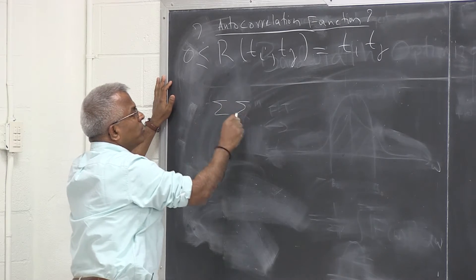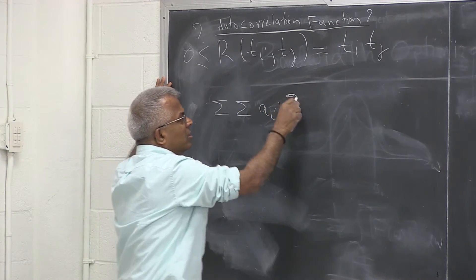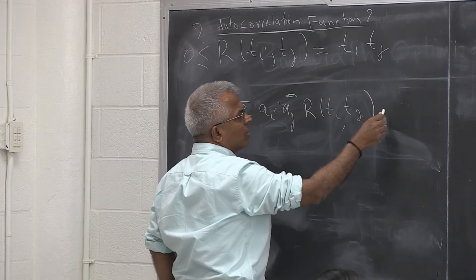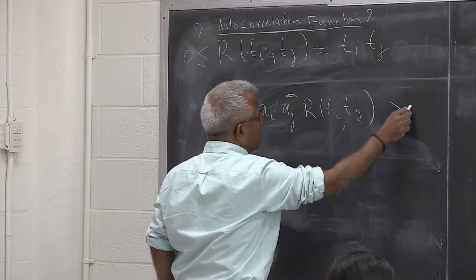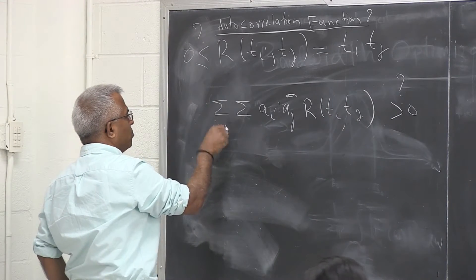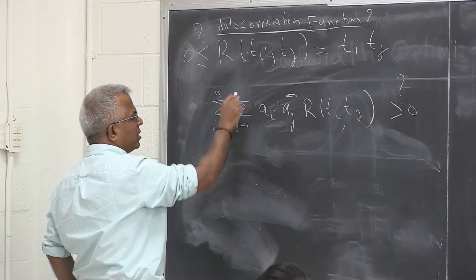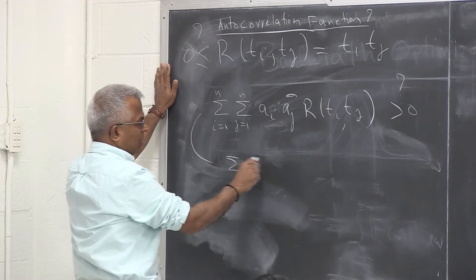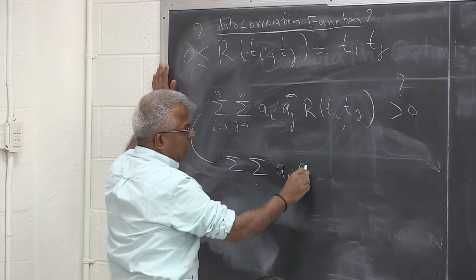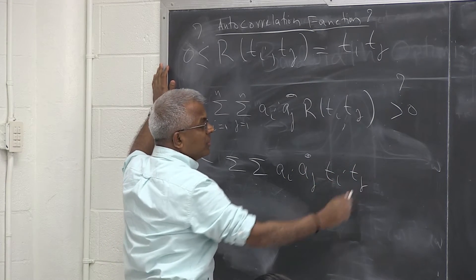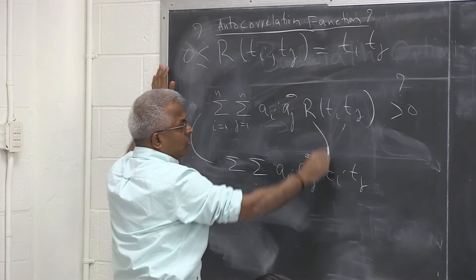So one way to prove it is, this is a_i, a_j star, R(t_i, t_j) should be what? We have to show that this is, we are asking, is this always greater than zero or not? It doesn't matter what a_i's or a_j's are. So let me substitute into this one. So this is double summation, a_i, a_j star, t_i, t_j. I just substituted for this function.